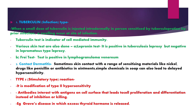Type 5 is the stimulatory type reaction, which is a modification of Type 2 hypersensitivity. In this type, antibodies interact with antigens on the cell surface, leading to cell proliferation and differentiation instead of inhibition or killing. An example is Graves' disease, in which excess thyroid hormone is released.